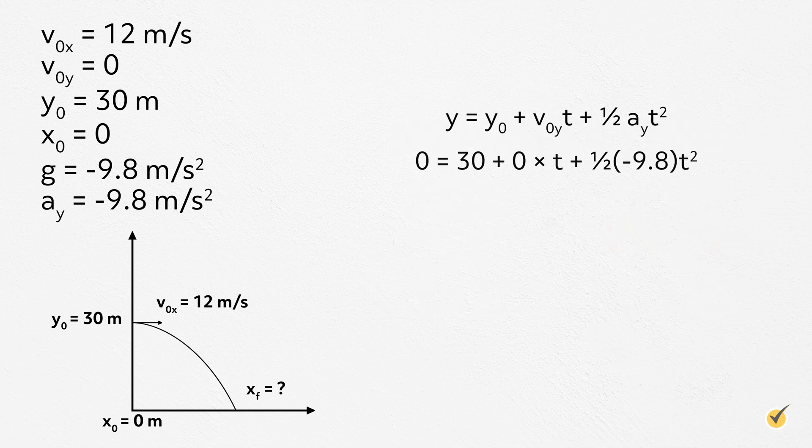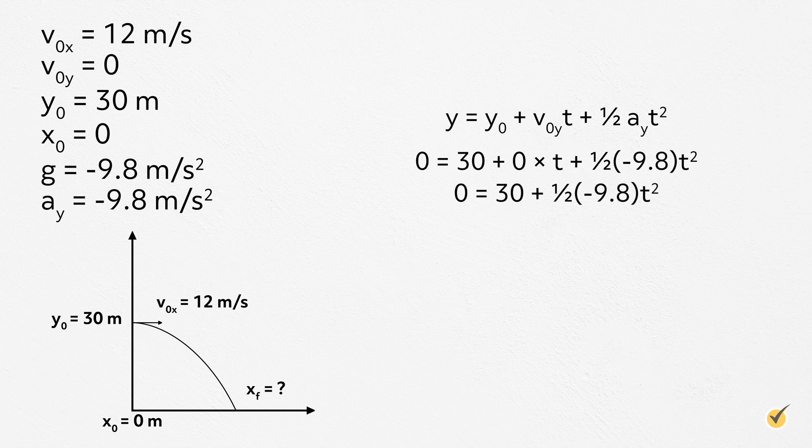If we plug in v0y equals 0, y0 equals 30 meters, and y equals 0, and ay equals negative 9.8 meters per second squared, negative because it is pulling the ball in the negative y direction, we get a simpler equation, 0 equals 30 plus 1 half times negative 9.8 times t squared.